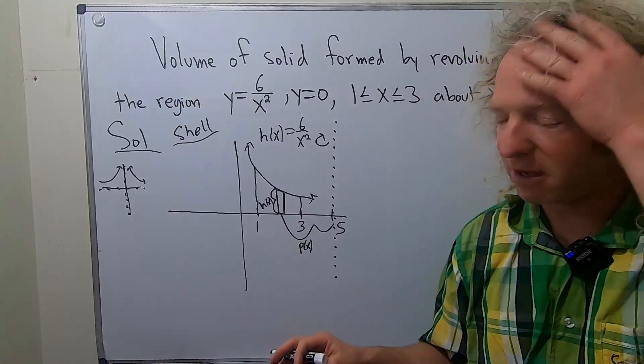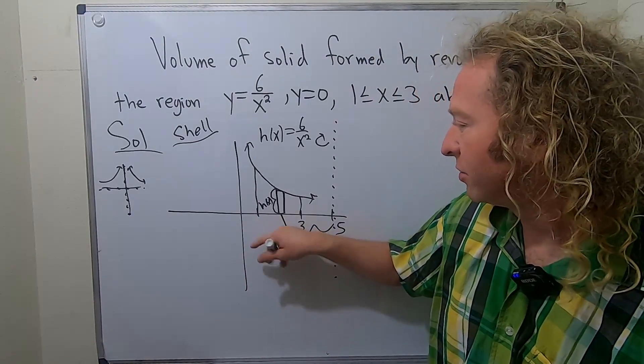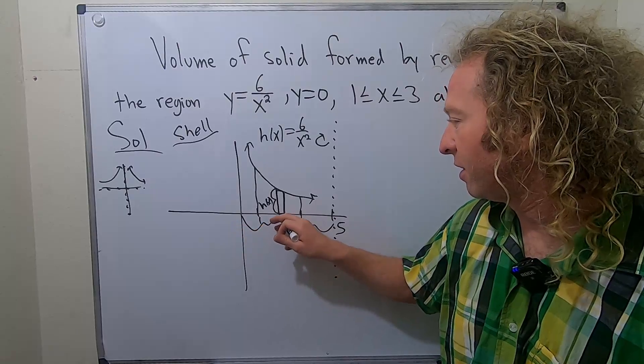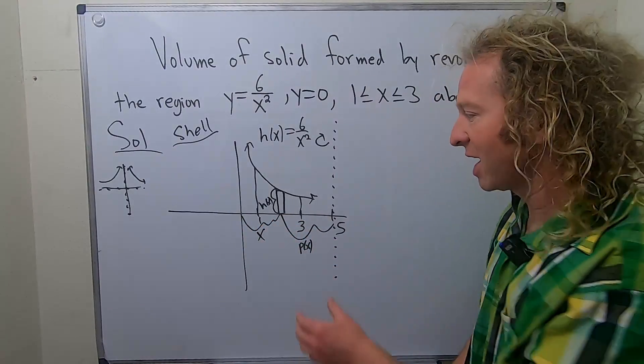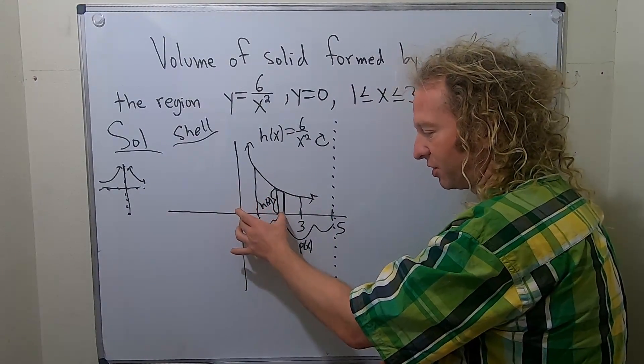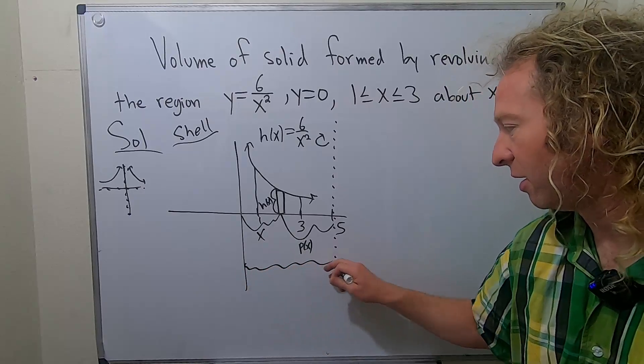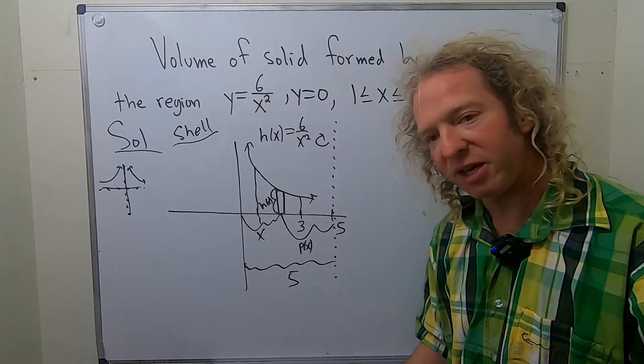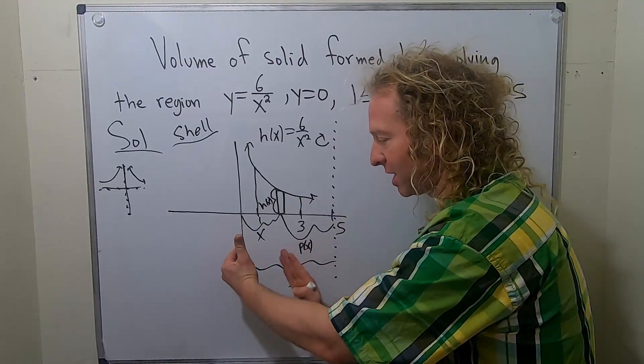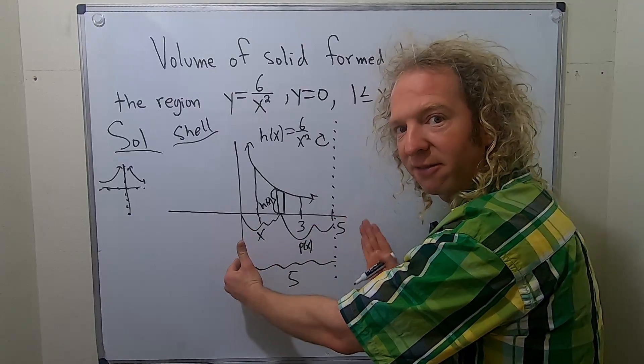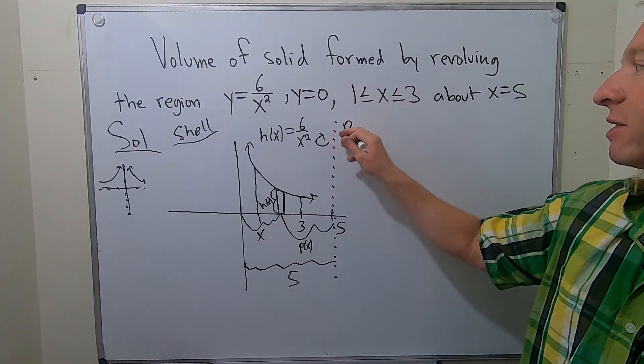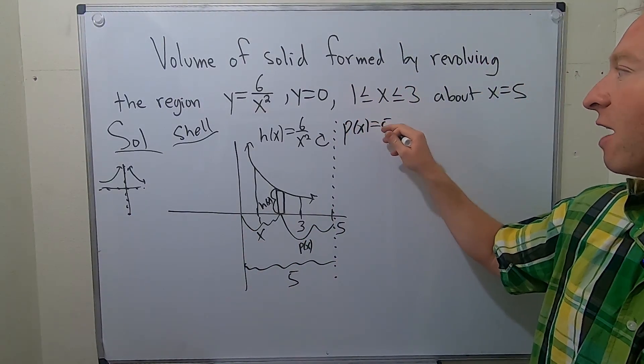Well, in order to find p of x, you have to maybe add something to the picture. So the distance from here to here is just x. As x varies, that distance is just x. This distance here is five. So p of x is going to be five minus x. So p of x is five minus x.